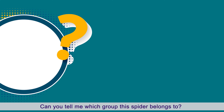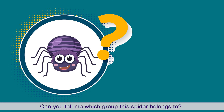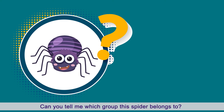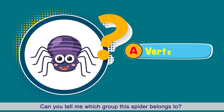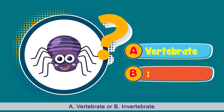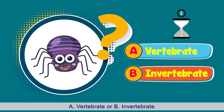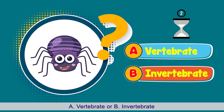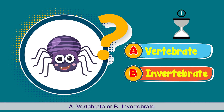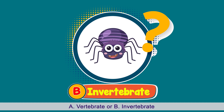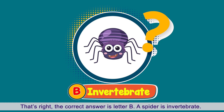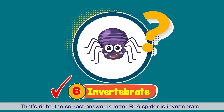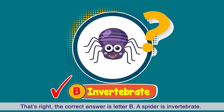Can you tell me which group this spider belongs to? A. Vertebrate? Or B. Invertebrate? That's right! The correct answer is letter B. A spider is an invertebrate.